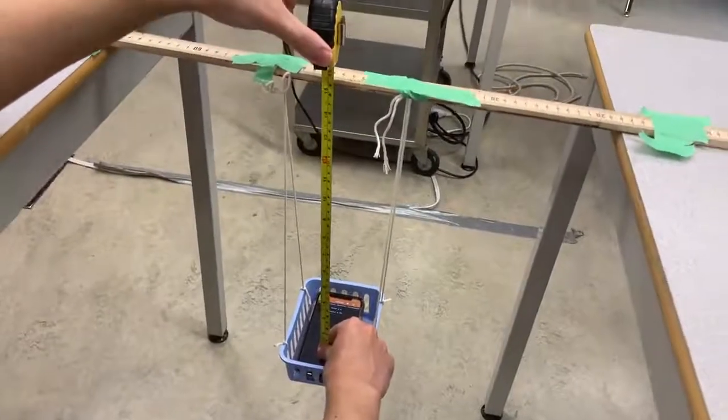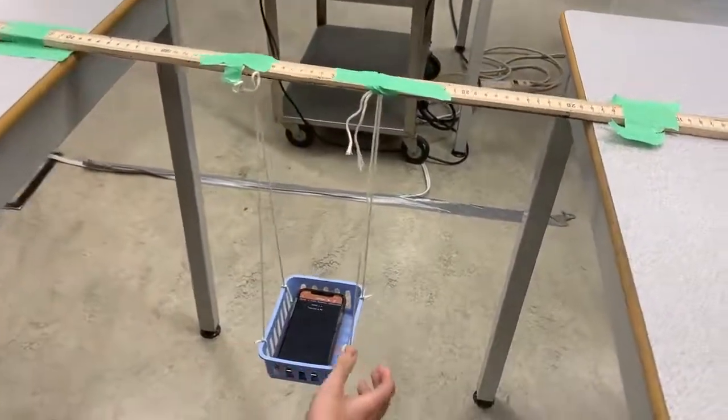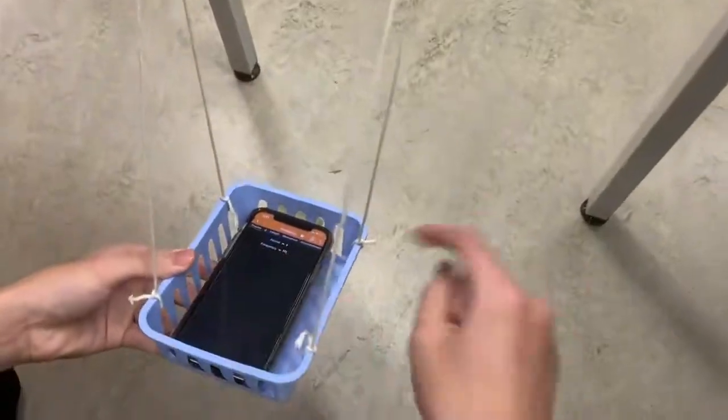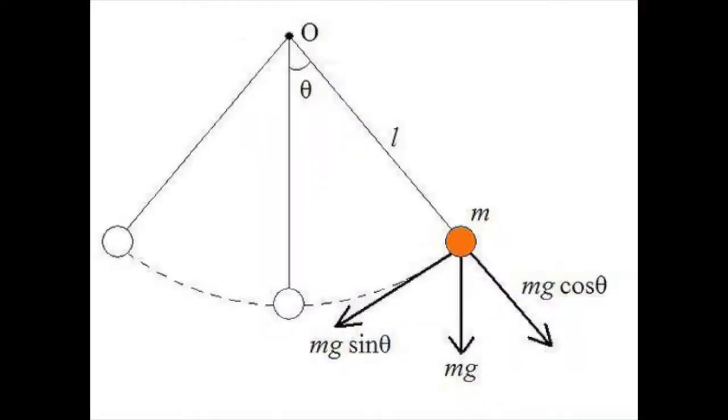However, it is important to note that the string lengths on both sides must be equal, otherwise the swing motion will be crooked. And it is also important to note that the swing motion must be less than 15 degrees, otherwise the equation that we used to calculate gravity derived earlier will not work.